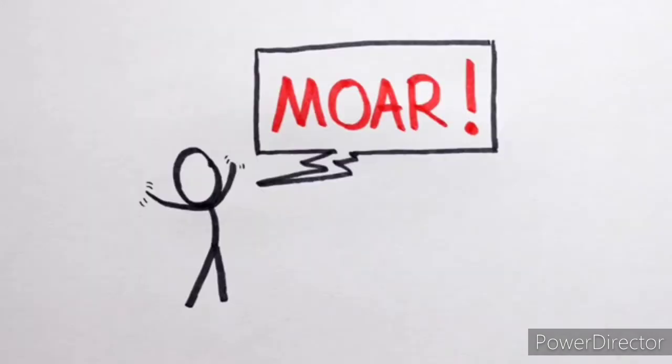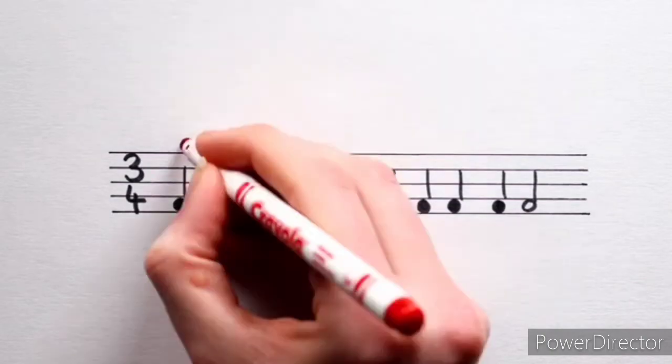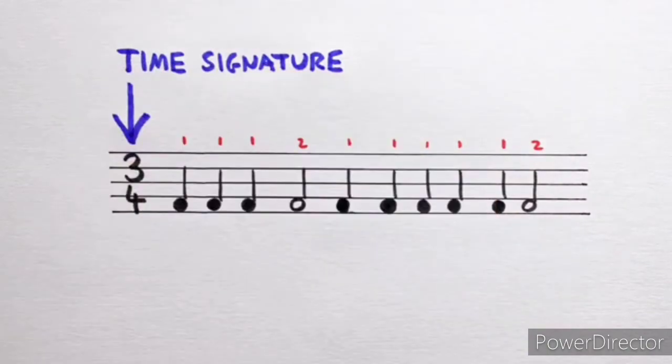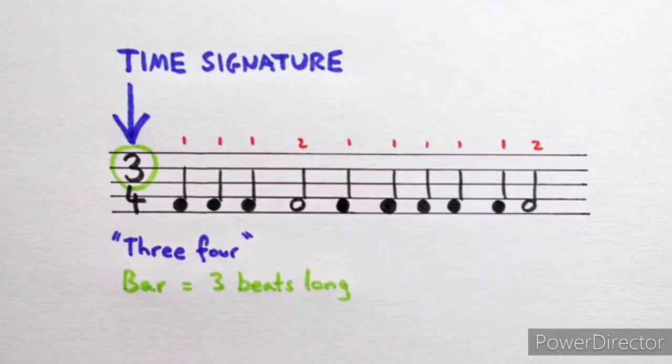Let's try another example. Just like before let's give the crotchets 1 count and the minims 2 counts. Now check out that time signature. This time the top number isn't 4, it's 3. This particular time signature is called 3-4. We're in 3-4 time so each bar now needs to have exactly 3 beats.